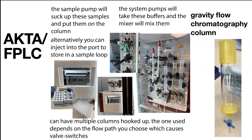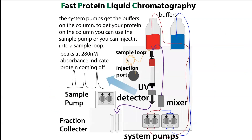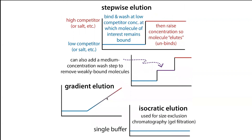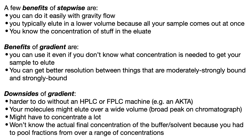A benefit of stepwise elution is that it can be done manually by gravity flow. When doing protein purification with a machine like an FPLC — a fast protein liquid chromatography machine like an AKTA — the machine can mix buffers for you, taking a buffer with low or no competitor and one with high competitor concentration and blending them. This allows you to do a gradient elution, gradually raising from low to high competitor concentration. A gradient elution is great when you're not exactly sure where your protein will come off. A downside is that your protein might elute over a very large volume, giving a broad peak that you then have to concentrate.